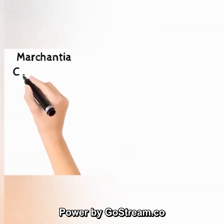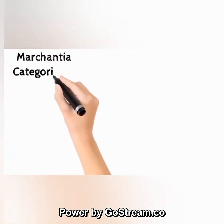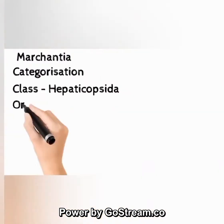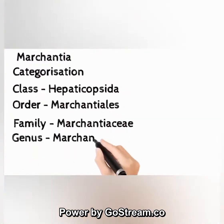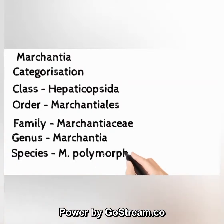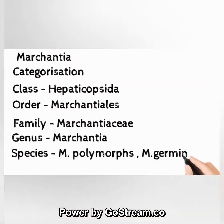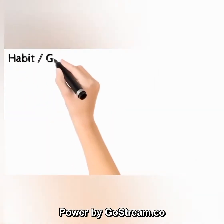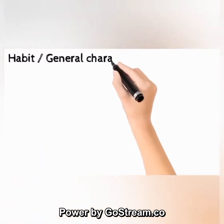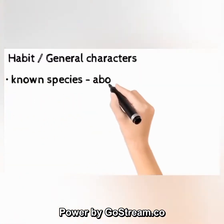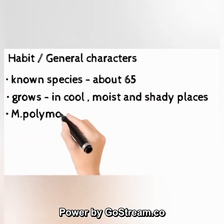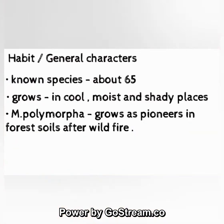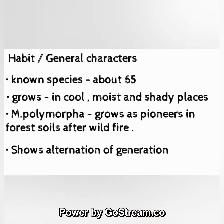Marchantia categorization: class Hepaticopsida, order Marchantiales, family Marchantiaceae, genus Marchantia. Species include M. polymorpha and M. geminata. Known species number about 65. Marchantia grows in cool, moist, and shady places. M. polymorpha grows as a pioneer on forest soils after wildfires. It shows alternation of generation.